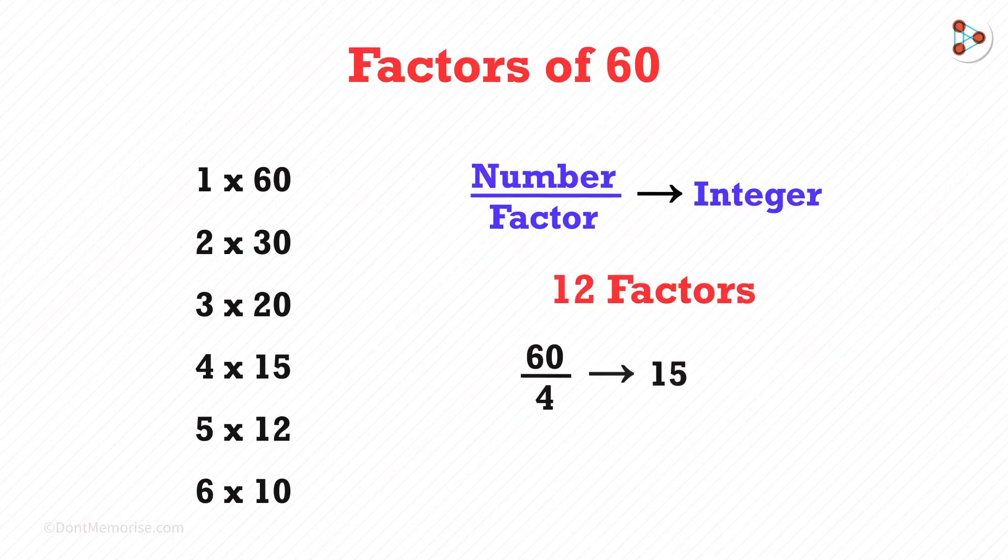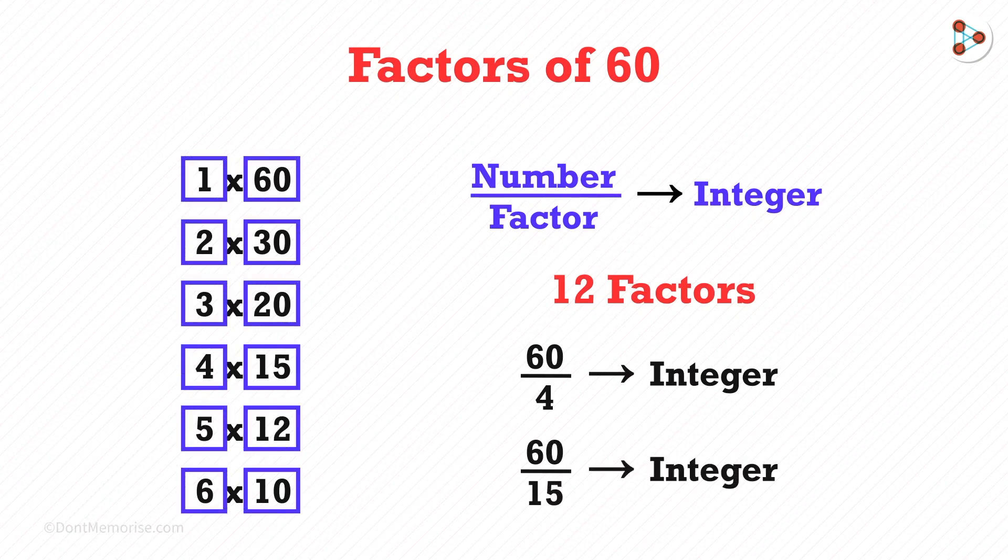60 divided by 4 is 15 without a remainder. 60 divided by 15, and we get an integer without a remainder. So these are the 12 factors of 60.